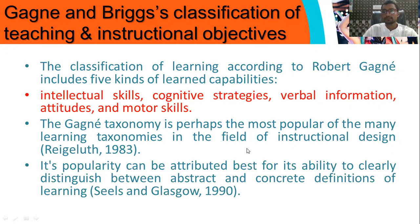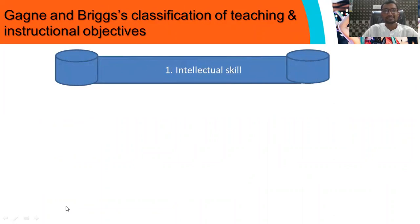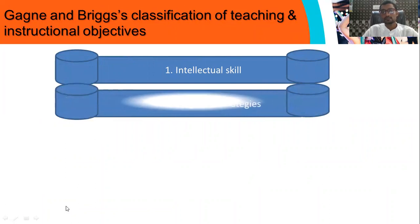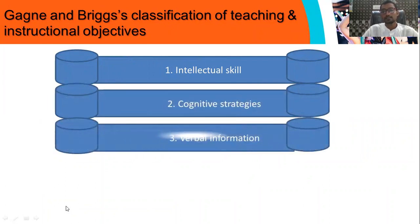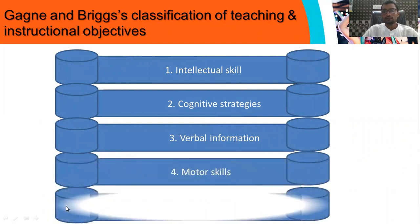Its popularity can be attributed to its ability to clearly distinguish between the abstract and concrete definition of learning. Now we will focus on all five skills. The first skill is intellectual skill, second is cognitive strategy, next is verbal information, then motor skill, and finally attitude.